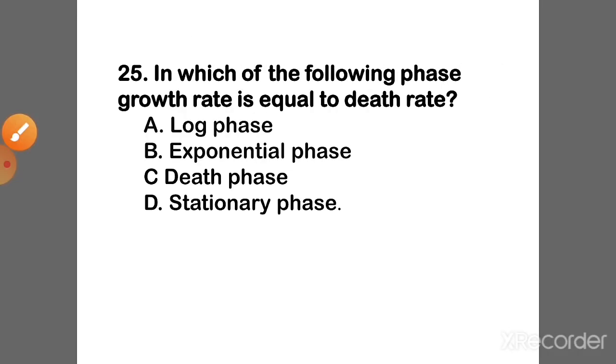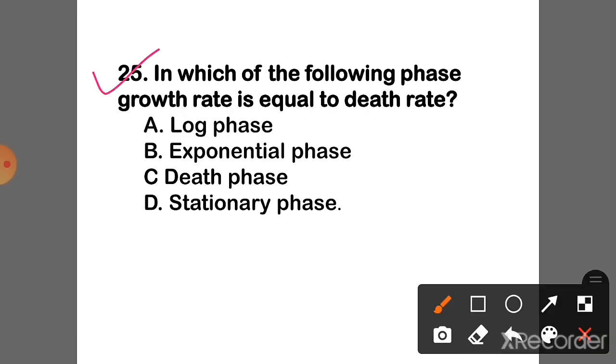Question 25: In which of the following phases is the growth rate equal to the death rate? The correct answer is Option D — Stationary phase.